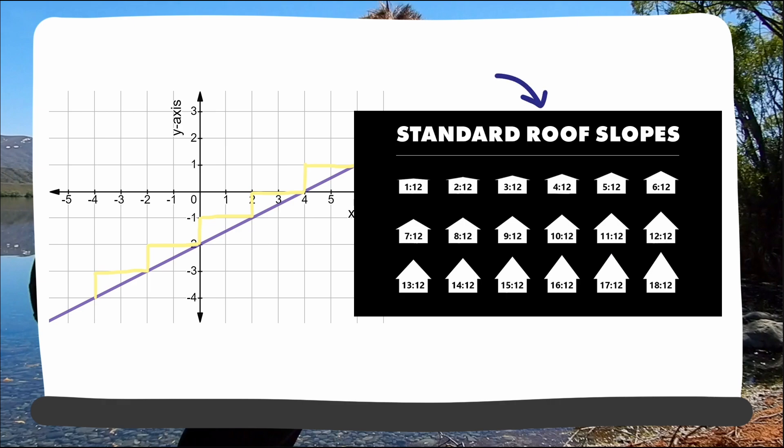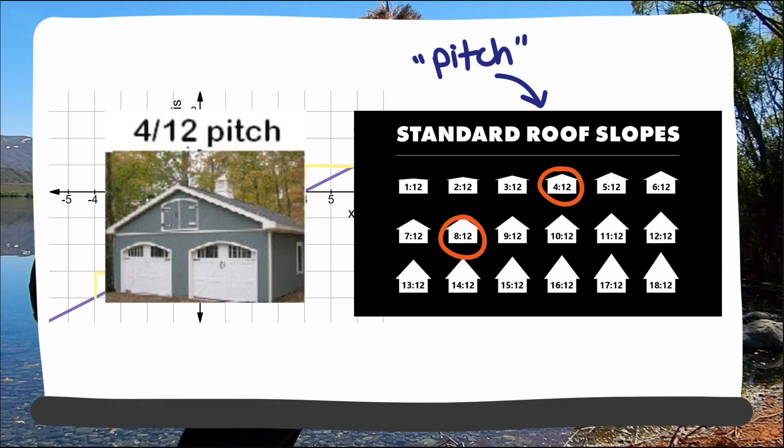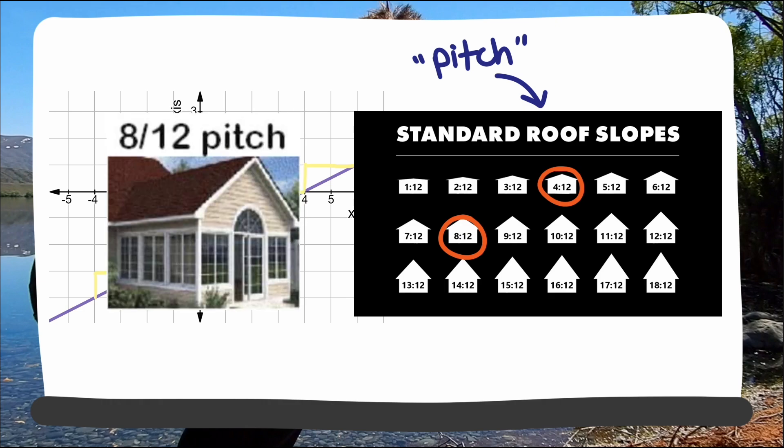For example, this strategy is used in construction to talk about the pitch or angle of roofs. They give pitches or angles by two numbers, like a 4-12 or 8-12. A 4-12 pitch means the roof goes up 4 units for every 12 horizontal units. 8-12, up 8 units for every 12 units horizontal.